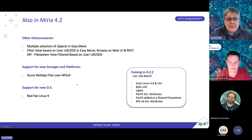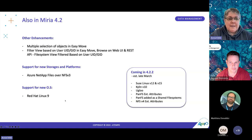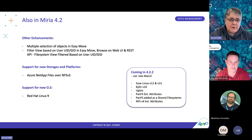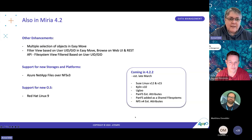With this version, we are adding support for new storages: Azure NetApp files over NFS version 3, and Uglue cloud storage. We are also adding support for new operating system versions: Red Hat Linux 9, SUSE Linux version 12 and version 15, and Kylin version 10. We are adding extended attribute support for PanFS, describing PanFS in the shared file system section of the Miria configuration interface, and support for NFS version 4 extended attributes — requested by several cloud service providers and customers.